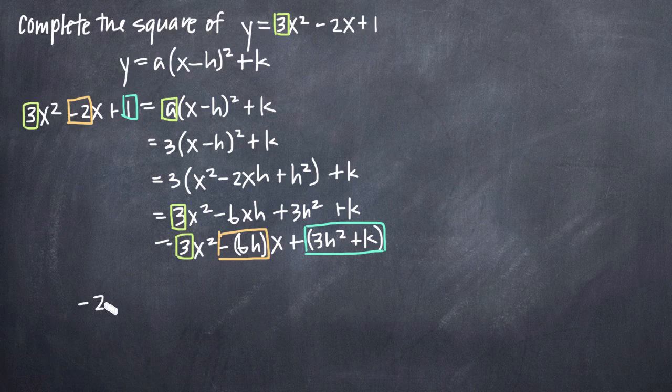So, what we'll get is negative 2 is equal to negative 6h. And when we solve this, we see that h is equal to 1 third.